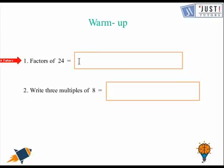What are the factors of 24? You can try this question by pausing the video and then come back to look at the answers. So the factors of 24 are 1, 2, 3, 4, 6, 8, 12, 24. All these numbers can divide 24 without leaving any remainder, so they all are factors of 24.